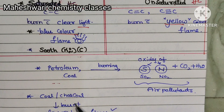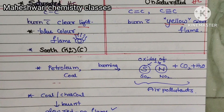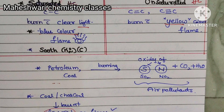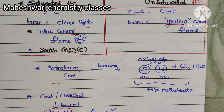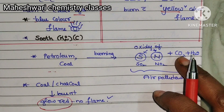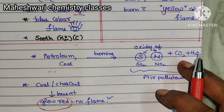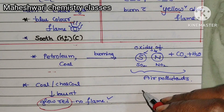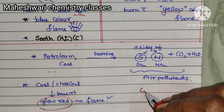Coal or charcoal, when burnt, forms a glow red color. Importantly, charcoal does not produce a flame — it only glows.